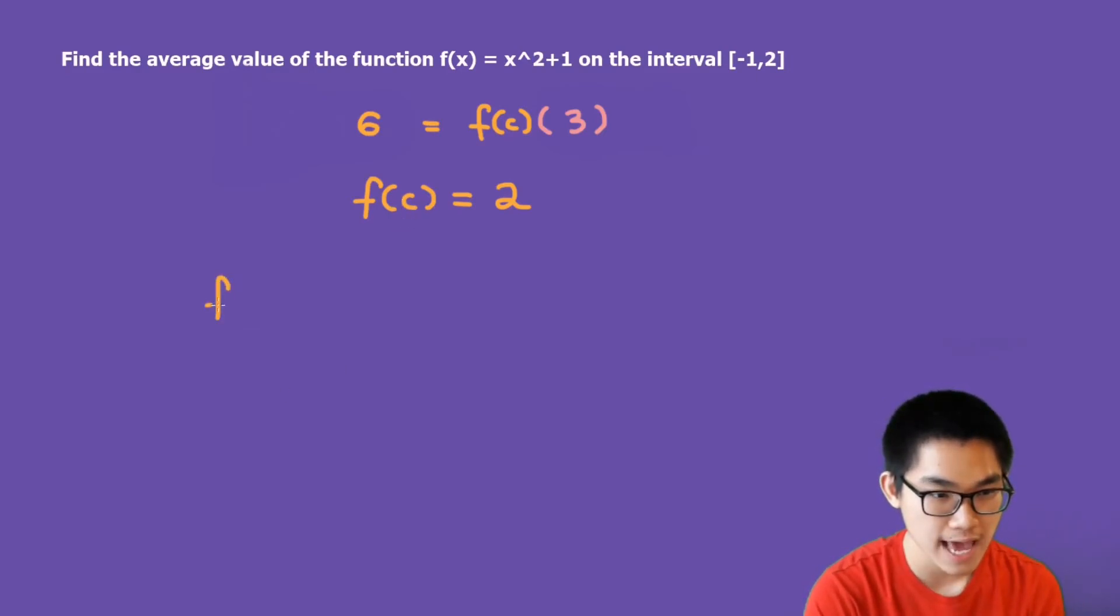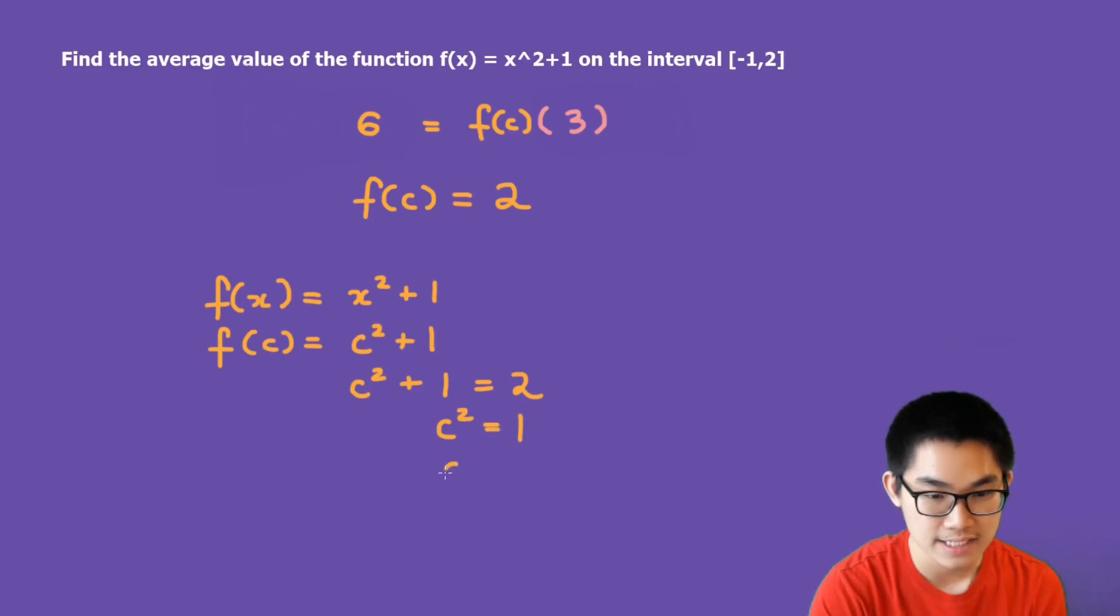Well, we know that f of x is equal to x squared plus 1. So f of c is equal to c squared plus 1. And since f of c is equal to 2, we know that c squared plus 1 is equal to 2. So c squared is equal to 1, and c is equal to minus 1 and 1.